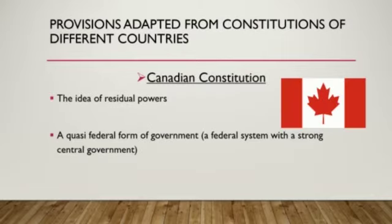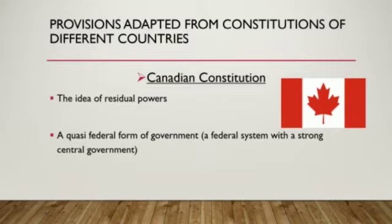Now we will study more provisions taken from the Canadian Constitution. First is the idea of residual powers, and second is a quasi-federal form of government, meaning a federal system with a strong central government. You should know that the federal system is one where power is divided into two parts: one at the state level and second at the central government level.